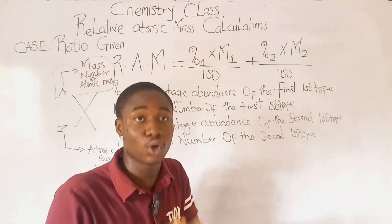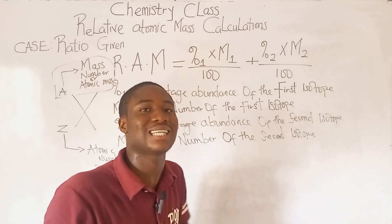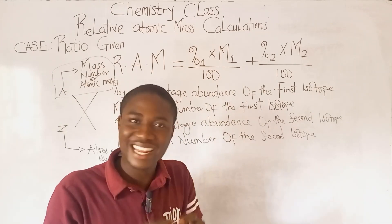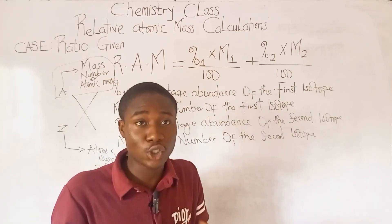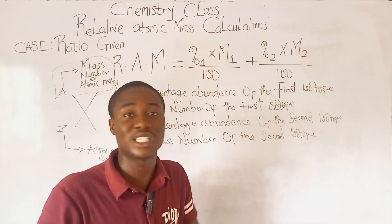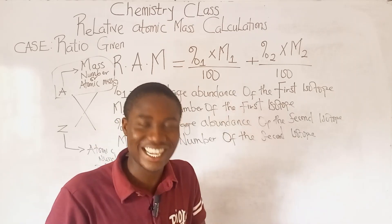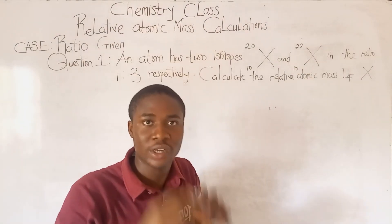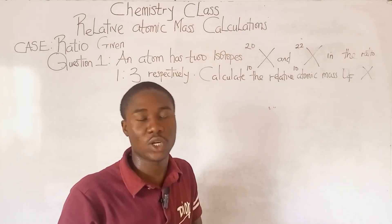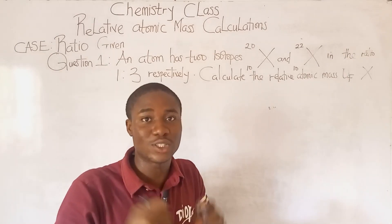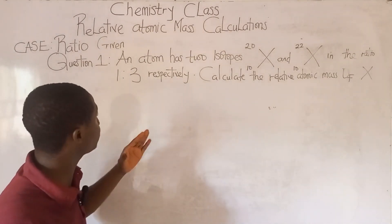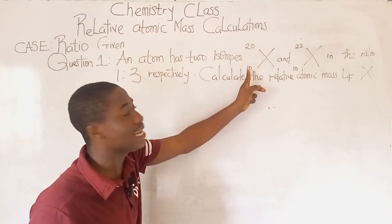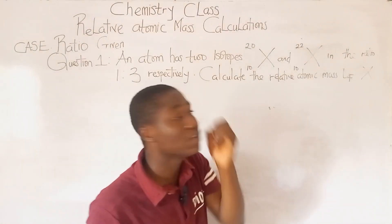Let's go over to the practice question where I'll explain how to solve questions under this aspect step by step. After the explanation, I'll give you a practice question to solve and provide the answer in the comment section below. The question says: an atom has two isotopes — X-20 (atomic number 10) and X-22 (atomic number 10) — in the ratio 1:3 respectively. Calculate the relative atomic mass of X.